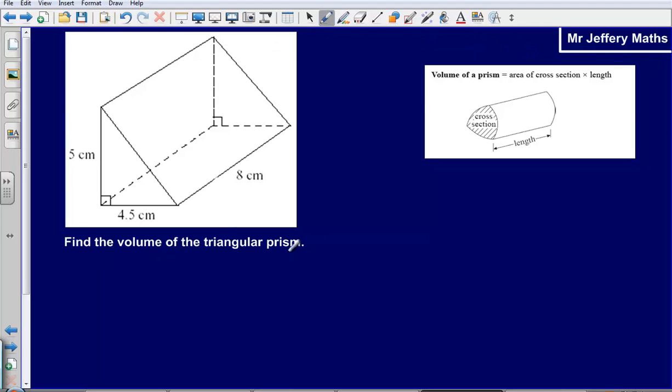Again we're asked to find the volume of the triangular prism. We know that the volume of the prism is the area of the cross section multiplied by the length, so we're going to need to figure out the area of the shape that is running through the prism. I'm just going to color it in a little bit - we can see that's a triangle. We need to work out the area of that face and then multiply it by the length.